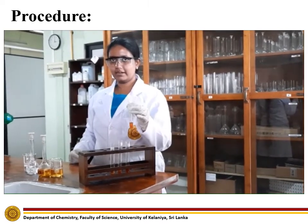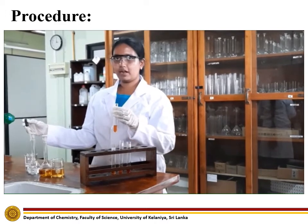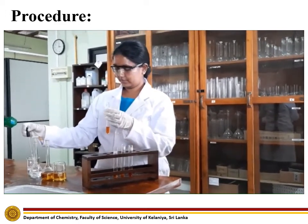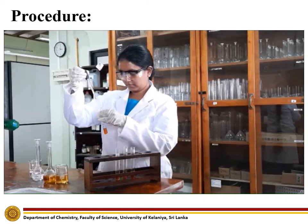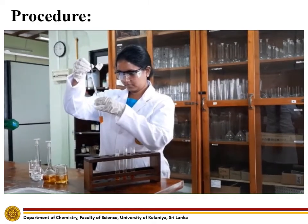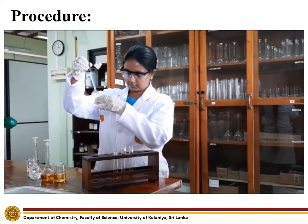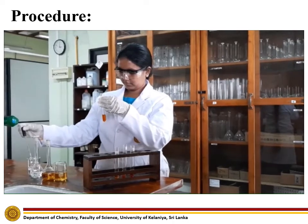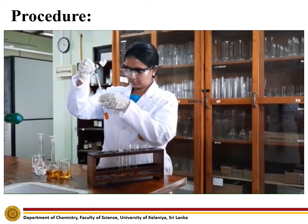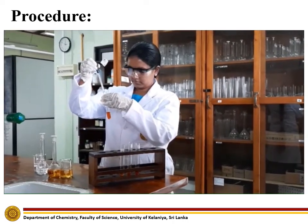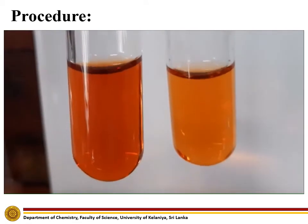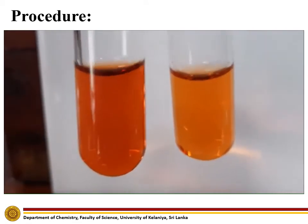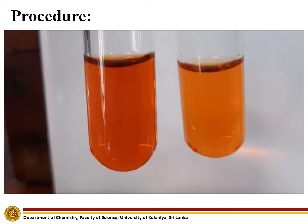To the final test tube, add 10 drops of potassium thiocyanate solution. Compared to the control, the fourth test tube also turned into a red color solution.